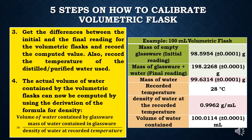Thus, 99.6314 grams divided by 0.9962 grams per ml gives 100.0114 ml, which is the volume of water contained in the volumetric flask.